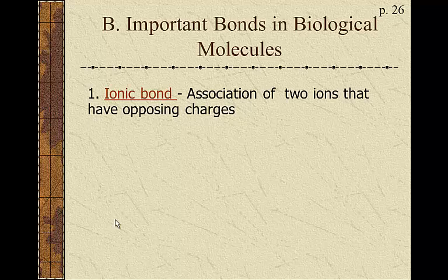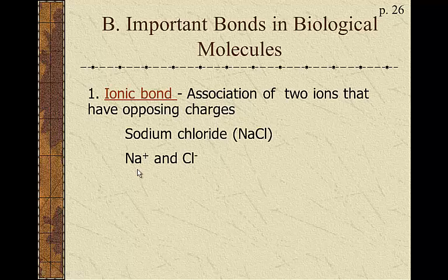The classic ionic bond is an association of two ions that have opposing charges. The classic example is sodium chloride, NaCl. The Na gets the plus charge and the Cl gets the minus charge, as we saw in the last example, when it transfers an electron.